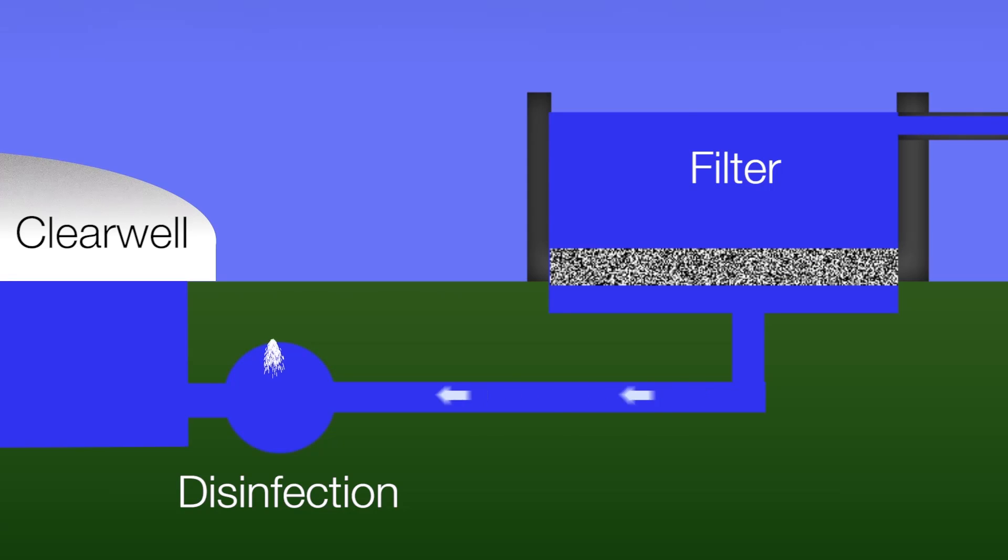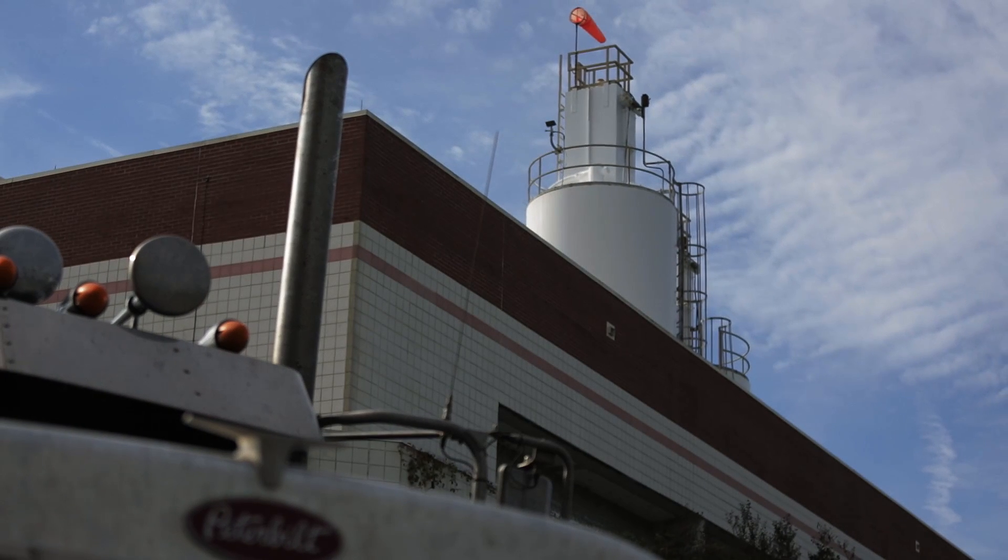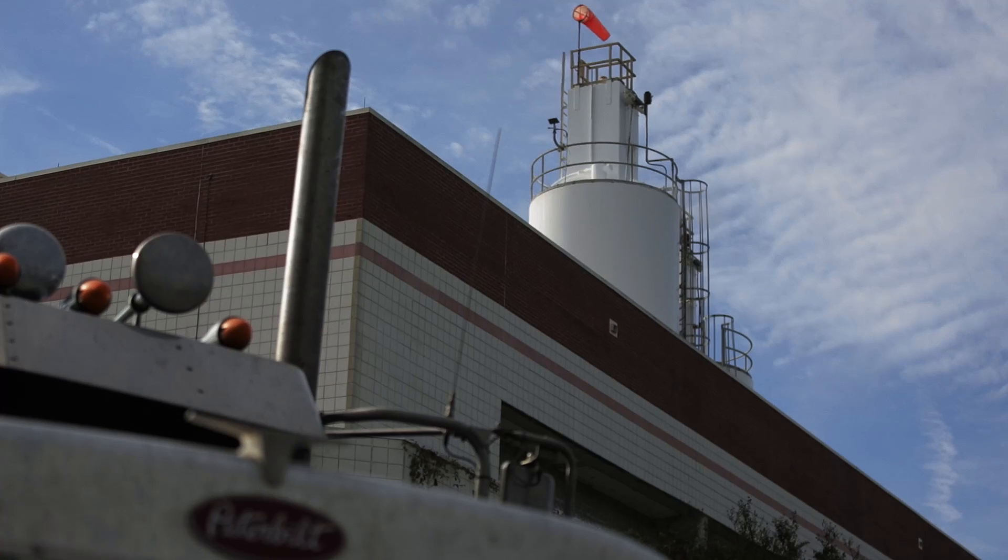The final step in the process before distribution to the public is disinfection. A small amount of chlorine and ammonia solution, just enough to kill any bacteria but not be harmful for human consumption, is added to the water. Lime is also added to balance the pH. The fluoride level is also adjusted to promote good dental health.